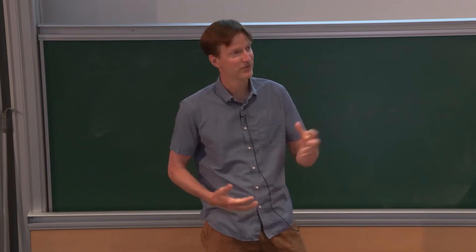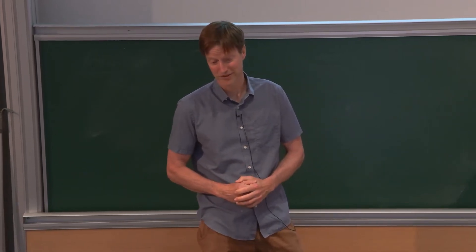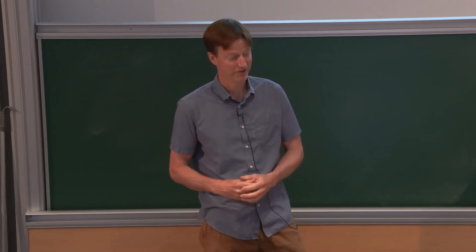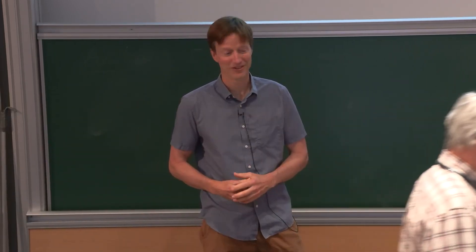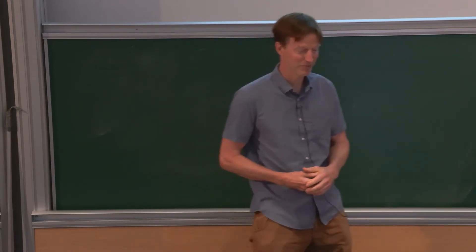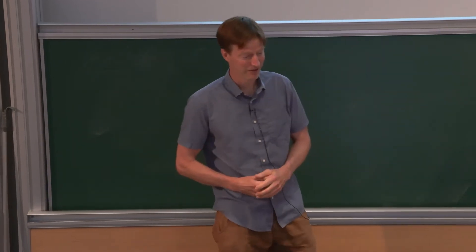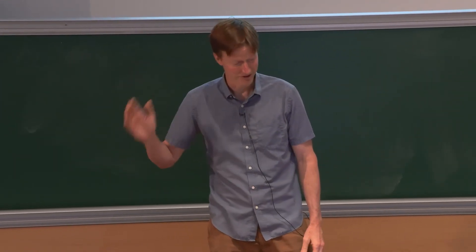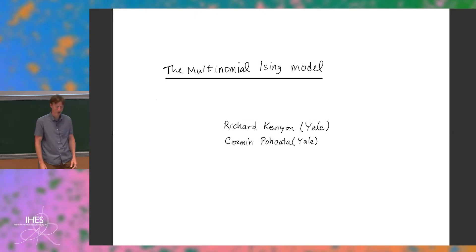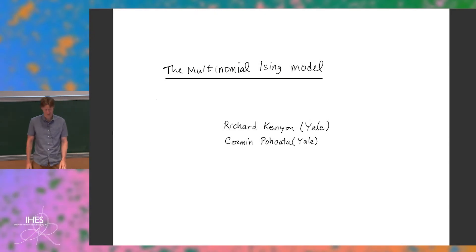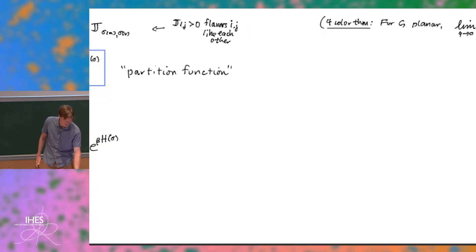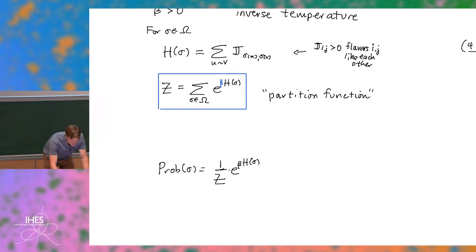I gave a talk about the random tiling model, in particular the multinomial random tiling model, which I'll mention later. There was a physicist in the audience who said 'why don't you try to do the same thing for the Ising model?' Simultaneously I got an invitation to come here for the hundred years of the Ising model. So this is what came out. Feel free to interrupt with questions. I'm a little shy about this talk since it's certainly not as sophisticated as most of the others.